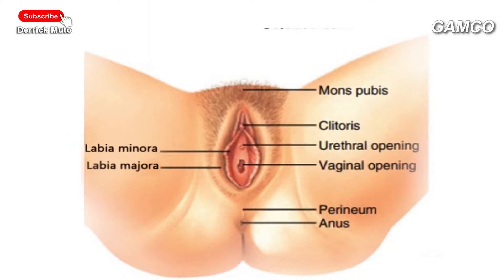Number eight: the clitoris. It is anteriorly located to the vaginal opening. It is a small body of erectile tissue which is homologous to the penis in males. It is vital in arousing sexual pleasure. Note that between the vaginal opening and the clitoris is the opening of the urethra, which is not part of the reproductive system.